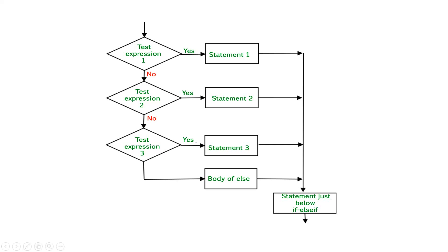So this is the structure. It will test expression one — that means if the condition is true, statement one will get executed and the control will come to the next statement after the if-elif-else block. Otherwise, the second condition will get tested. The statement under the second condition will get executed. Otherwise, the next one will get tested. If all the conditions are false, the statement under the else will get executed and control will come out of the block. So only one block will execute where the condition is true; otherwise, if all the conditions are false, the statement under the else will get executed.